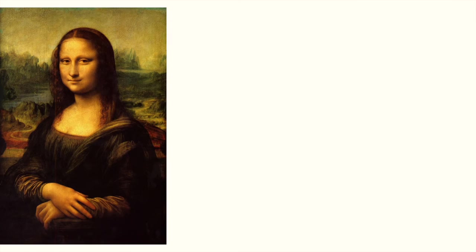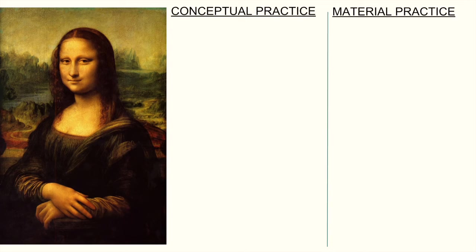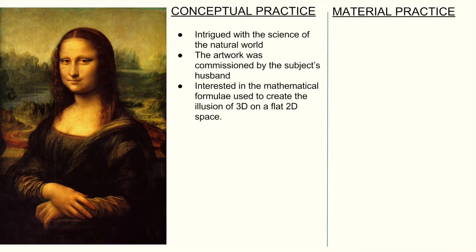Now let's have a look at the Mona Lisa again. What do we know about Leonardo da Vinci? We need to look at him first in terms of his conceptual practice and then his material practice. Conceptually, from research, we know that he was intrigued with the study of the natural world — he was not just an artist but also an inventor and a keen observer of what was happening around him. The purpose of this artwork was that it was commissioned by the subject's husband. Additionally, Leonardo da Vinci was very interested in mathematical formulas, and he applied these to create the illusion of three dimensions on a flat two-dimensional surface. It was during the Renaissance period that this particular technique became very well refined.